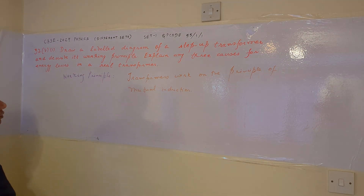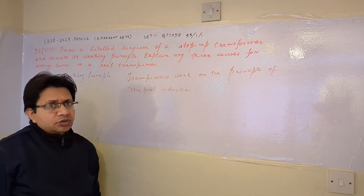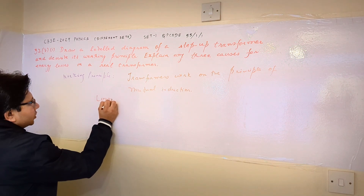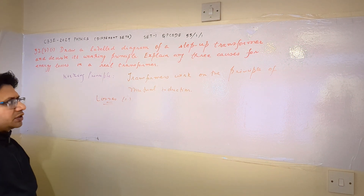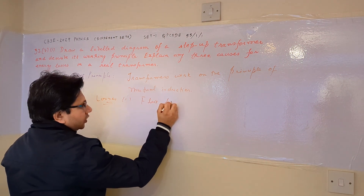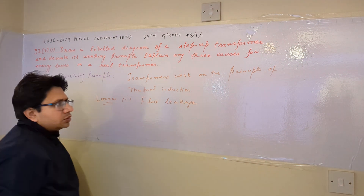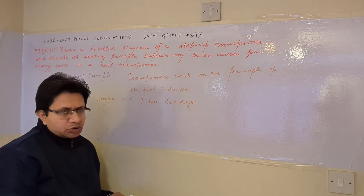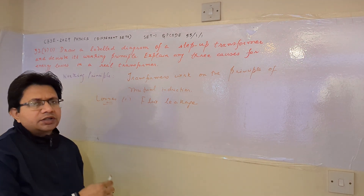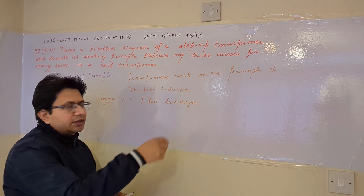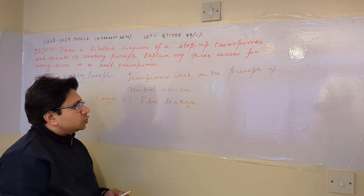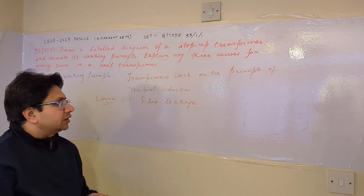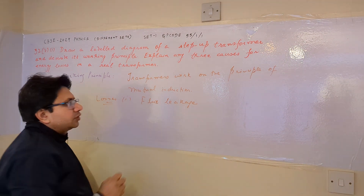The third part asks to explain three causes of energy losses in a real transformer. The first loss is flux leakage. When an input signal is applied, alternating flux is produced on the primary side and links with the secondary side to develop an EMF. In a real transformer, the coupling is not perfect, so flux leakage is present.